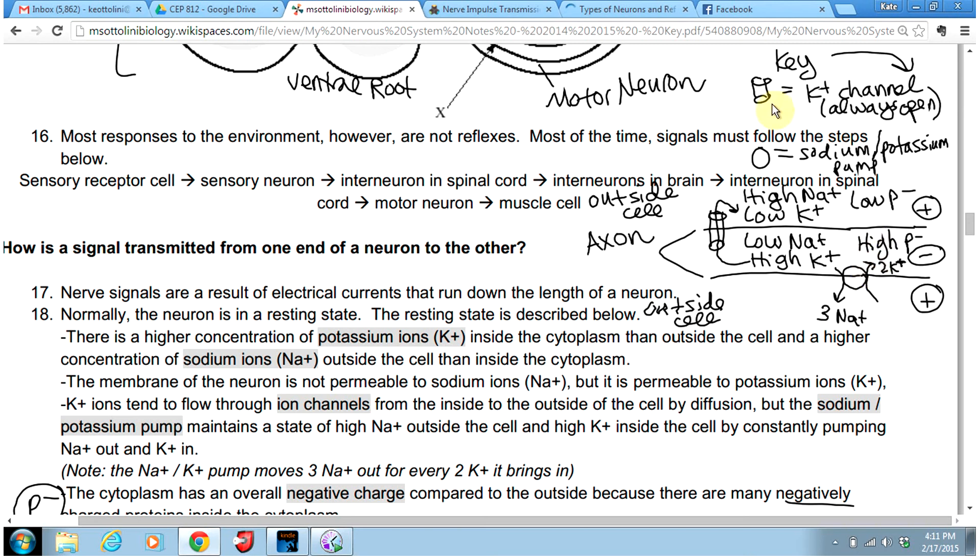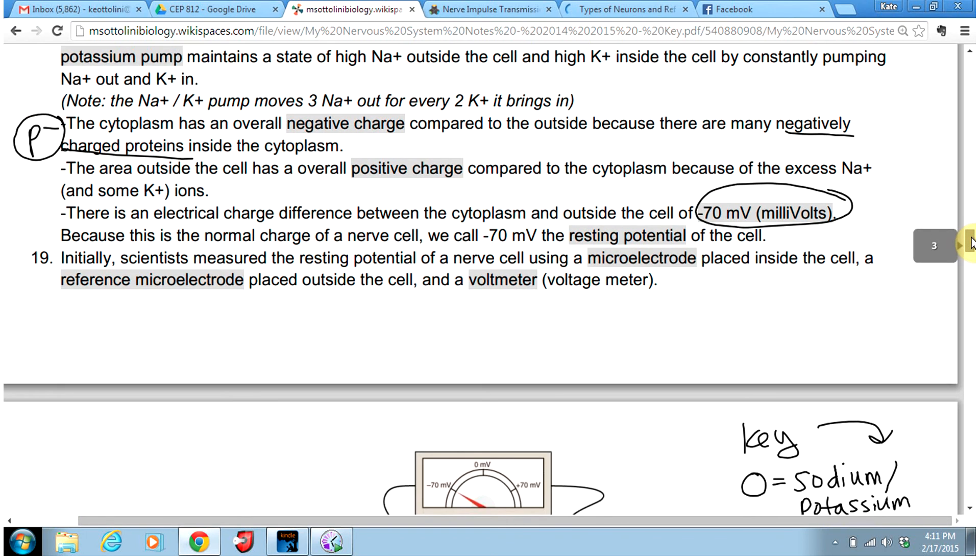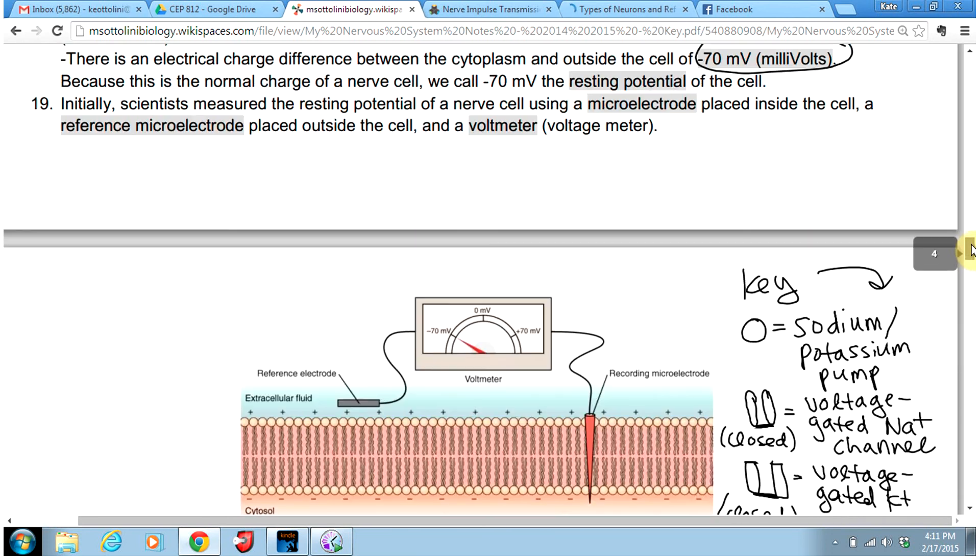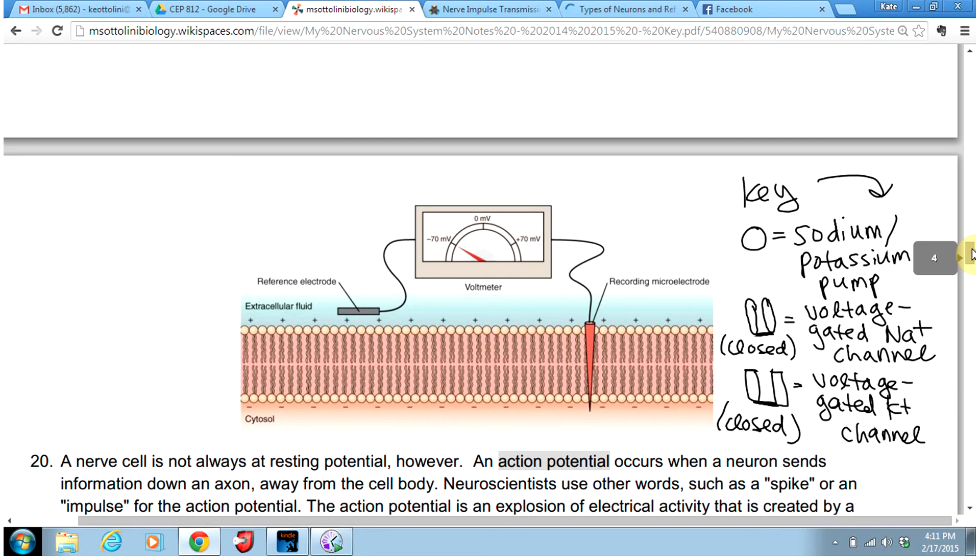So note on my little key, I show that this is a K plus channel and that this little circular guy is a sodium potassium pump. And I think that is it for resting membrane potential. In the next video we are going to talk about the action potential, which is when a signal gets sent along a nerve cell.